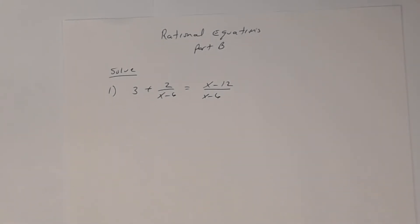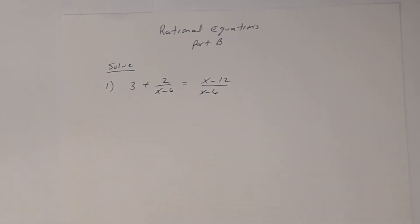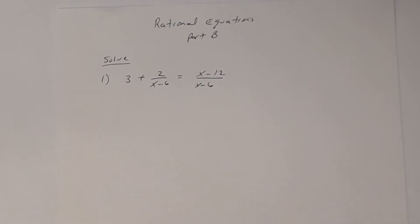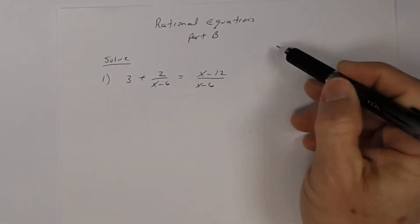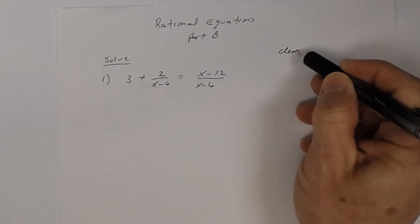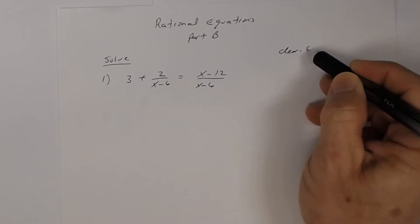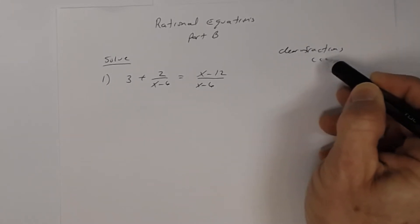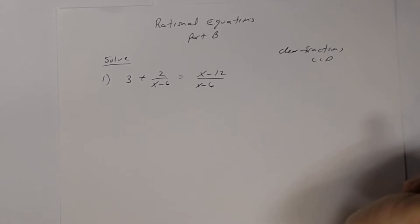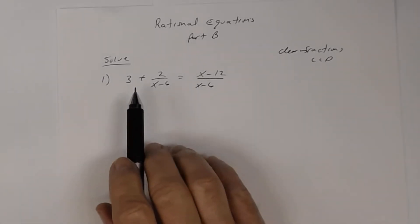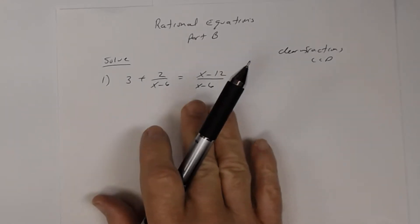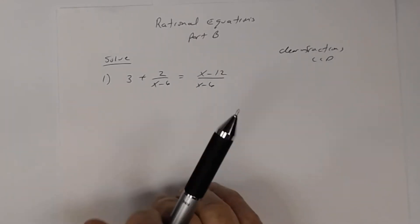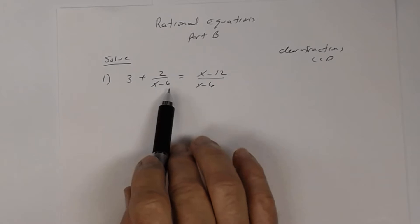In these problems, we're going to look at the work needed for the worksheet dealing with Part B. When you do Part B, the direction is to clear the fractions — use a method called clearing the fractions — and you have to find the LCD. Remember that your denominators must be factored. In this part of our lesson, the denominators will already be factored.